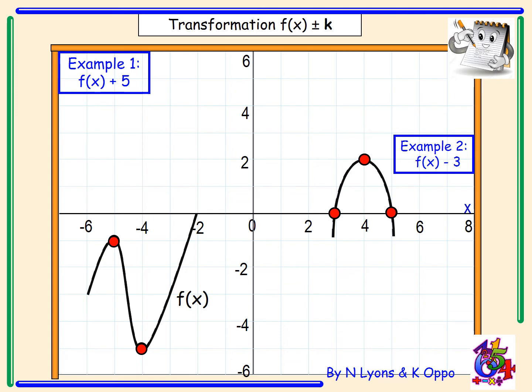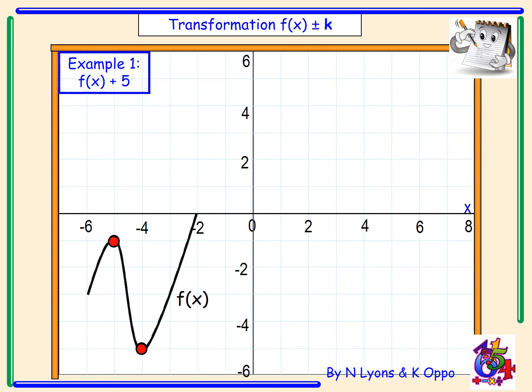We will now look at some examples. Example one: We have the graph of f(x) and we need to draw the graph of f(x) + 5. So this is going to move the graph vertically up by five places. We've been given two clear coordinate points which are (-5, -1) and (-4, -5). These two points must be moved up five places.